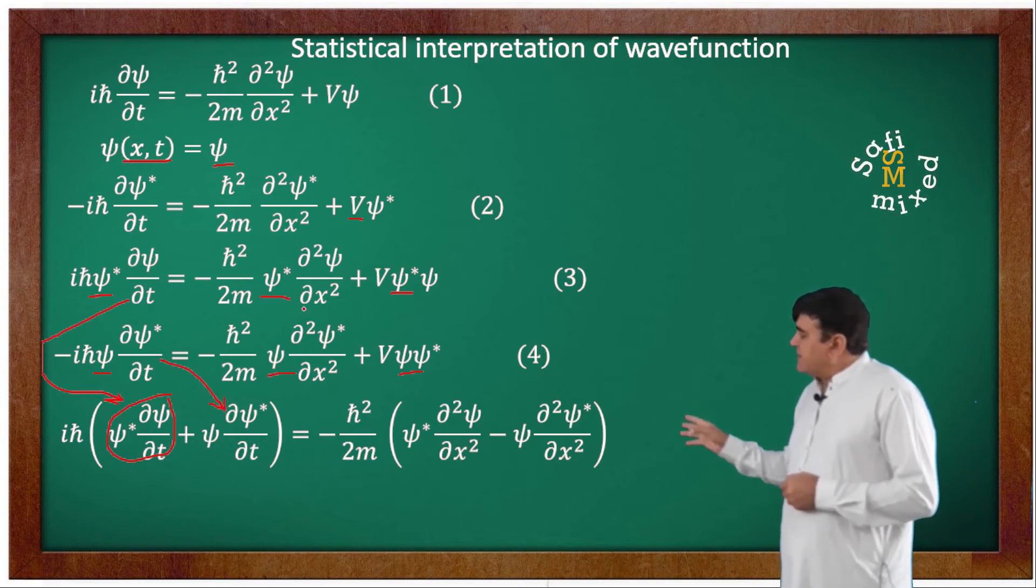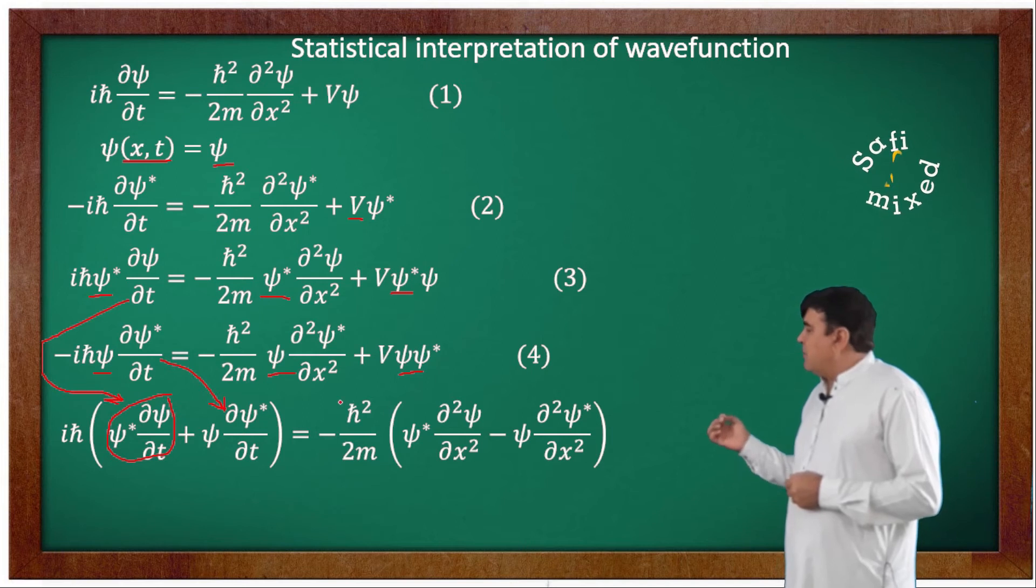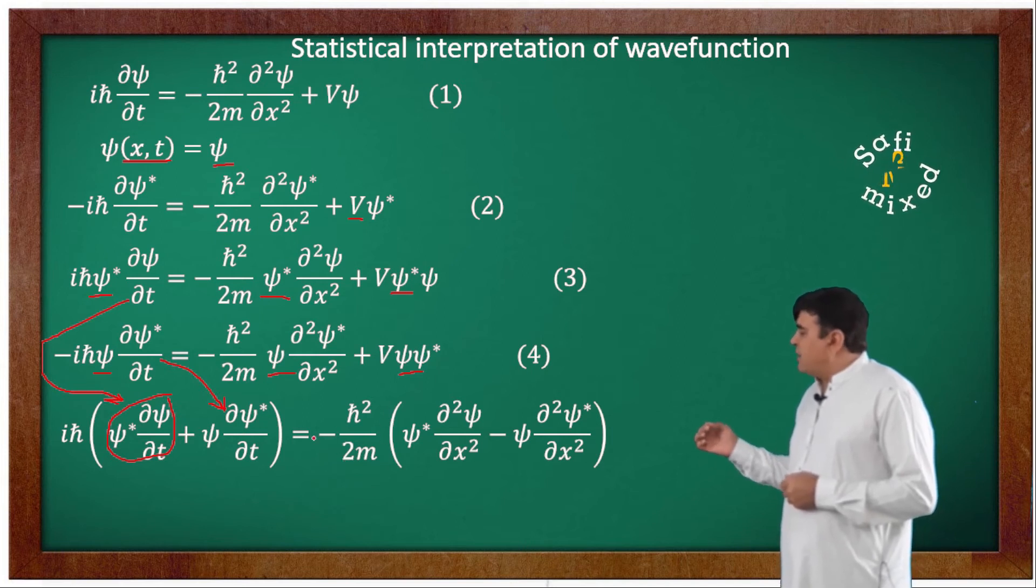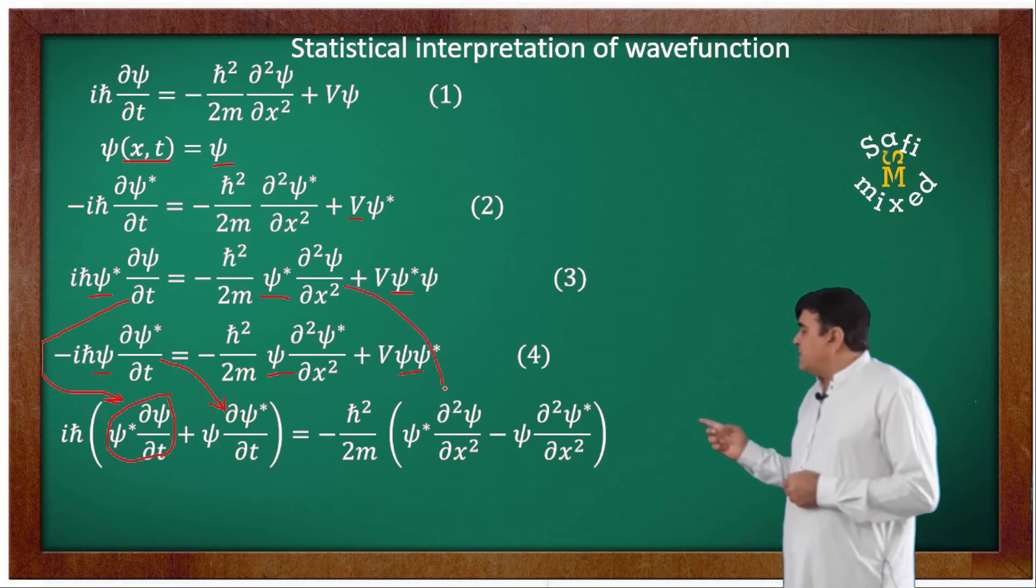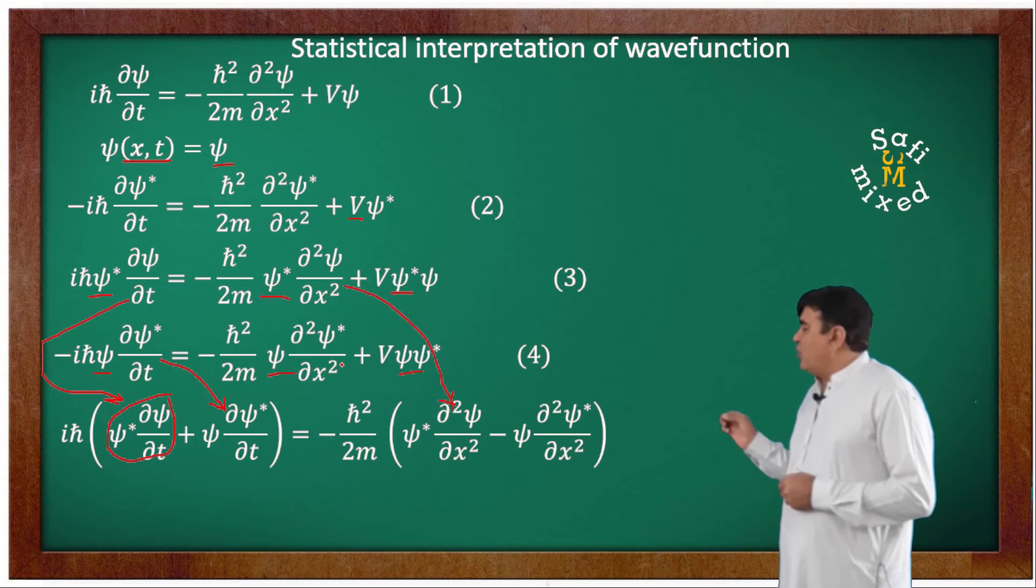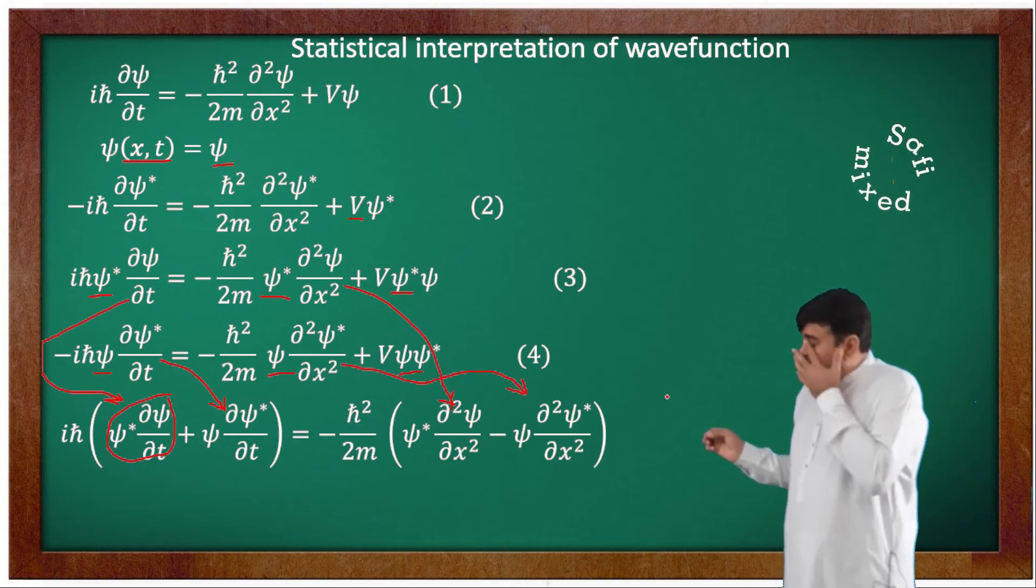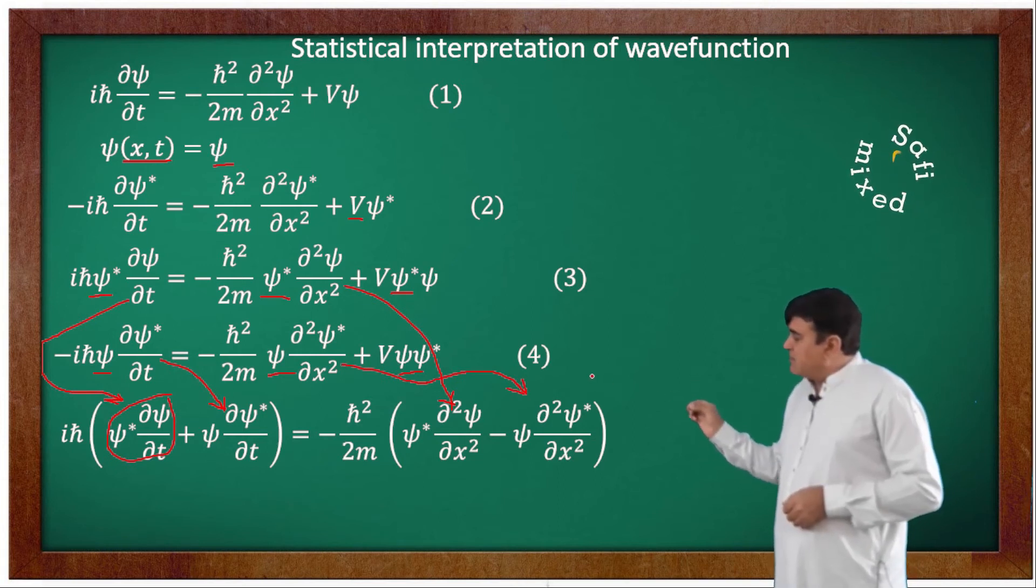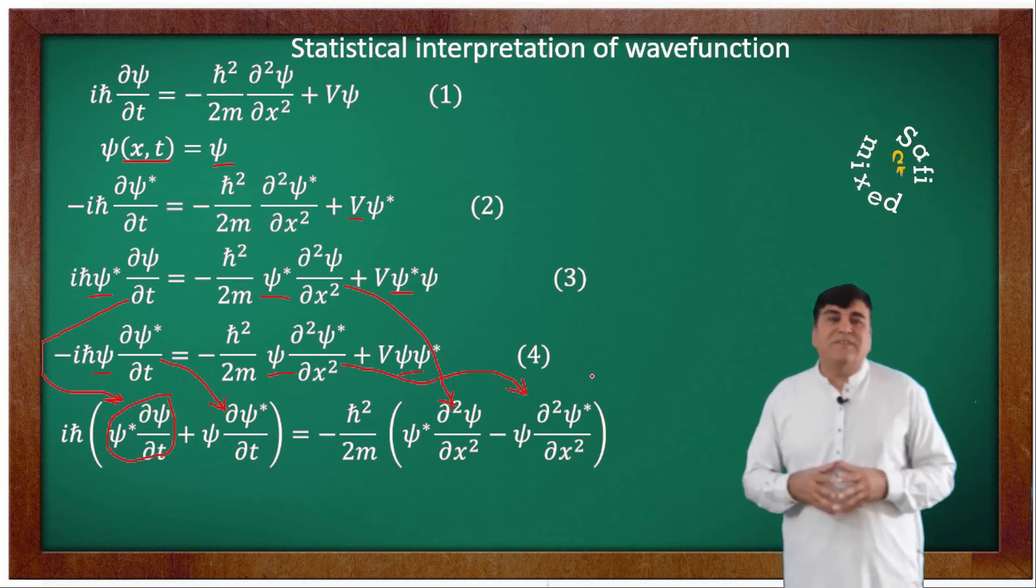And similarly on the right side of equation 4, I have taken minus h-bar square divided by 2m common where again the first term inside the bracket corresponds to the first term of equation 4 and the second term corresponds to the first term of equation 3, and therefore V psi steric psi appears in both equations cancel out from this result.